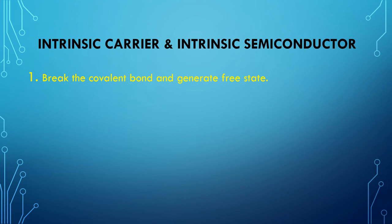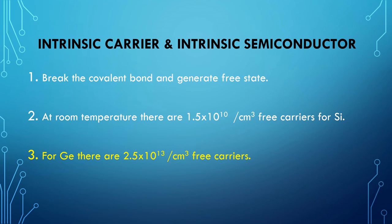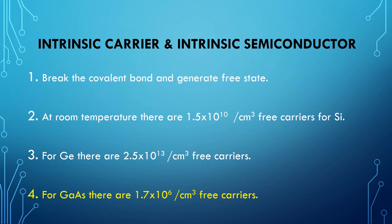Germanium has the highest number of intrinsic carriers and gallium arsenide has the lowest. At room temperature, silicon has an intrinsic carrier concentration of 1.5×10¹⁰ per centimeter cube. For germanium, the intrinsic carrier concentration is 2.5×10¹³ per centimeter cube. For gallium arsenide, the intrinsic carrier concentration is 1.7×10⁶ per centimeter cube.